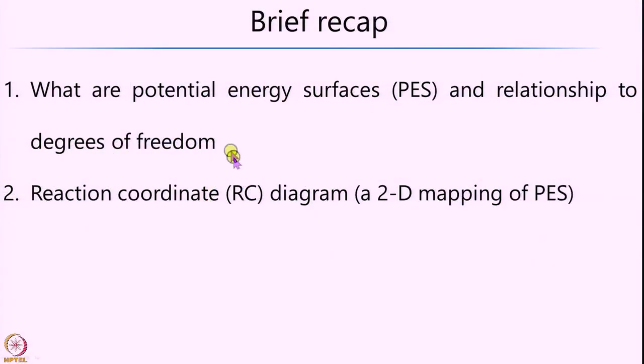We had seen that based on the kind of molecule, one could have either a hypersurface of 3n minus 5 or 3n minus 6, where n is the number of atoms or ions in the given system. We had also said that these 3-dimensional surfaces can be mapped onto a 2-dimensional picture, called a reaction coordinate diagram. Here, one looks along a particular coordinate of interest — either a bond length, bond angle, or a combination of them — and draws a 2-dimensional representation. This is typically used in looking at the transition states of a given reaction or transition state theory.